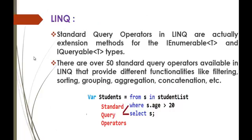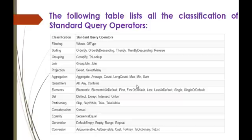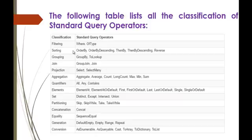As I mentioned in the previous slide, LINQ provides a set of functionalities. If you want to filter, sort, group, aggregate, or concatenate, it provides a set of operators described here. If you want to filter from a list or database, use 'Where' and 'OfType' operators. For sorting, use 'OrderBy', 'OrderByDescending', or 'Reverse'. There are many operators with their classifications listed here, and these are the operators we use in our daily work to write a LINQ query.